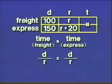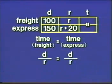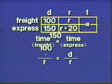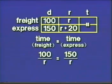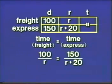Now all we need to do is fill in information in this format, and we'll have an equation for a solution. The distances are given directly in our chart above, so we'll replace D on the left side with the distance for the freight, which is 100. And D on the right side is the distance traveled by the express, which is 150. On the left side, the rate for the freight is simply R, so there's no replacement. In the denominator on the right side, we'll replace R with R plus 20.